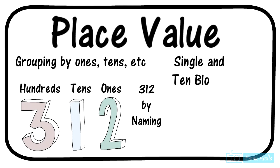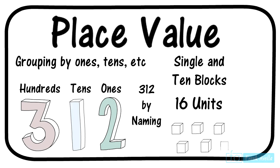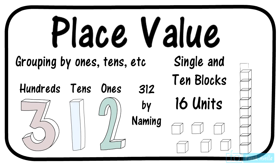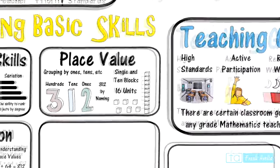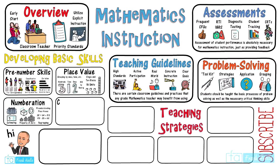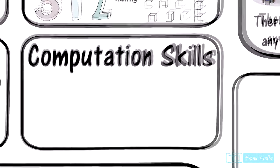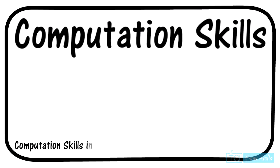Another method for teaching place value is to use unit blocks, such as singles and tens. Let's say you have 16 units — that can be represented as a single unit and one unit of the ten blocks piled up together into a set. And now onto the last component in basic skills: adding and subtracting with efficiency — computational skills.